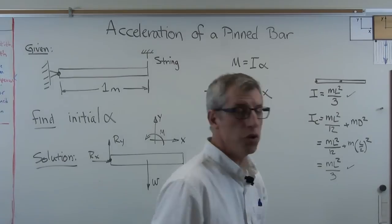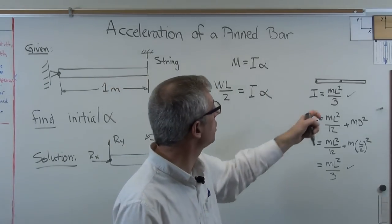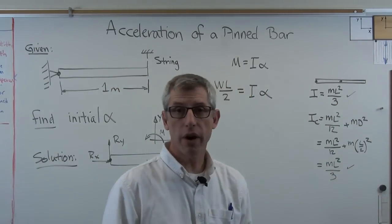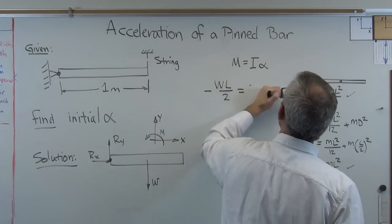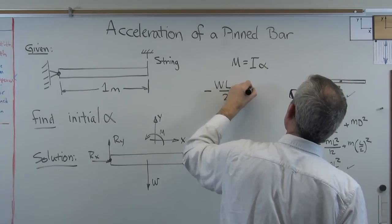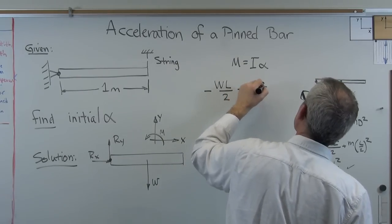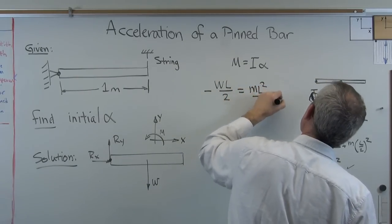So we've got two ways to get the mass moment of inertia. We can either just look it up or we can calculate it from some stuff we know. So let's replace that with mL squared over 3 times alpha.